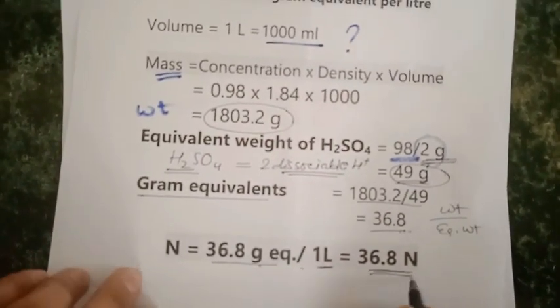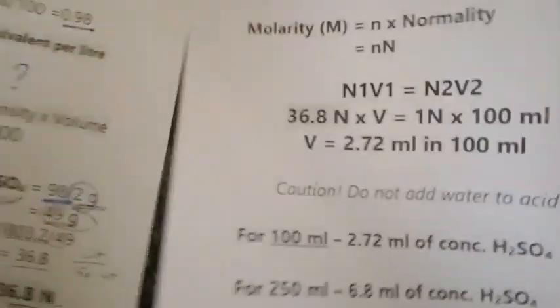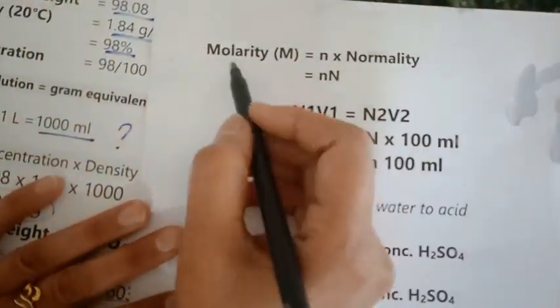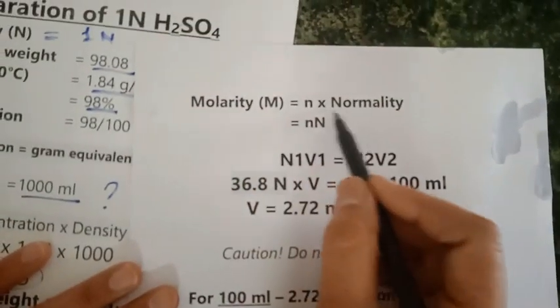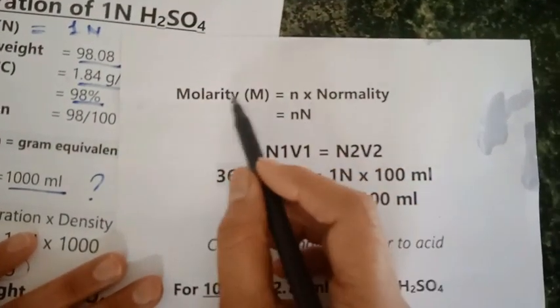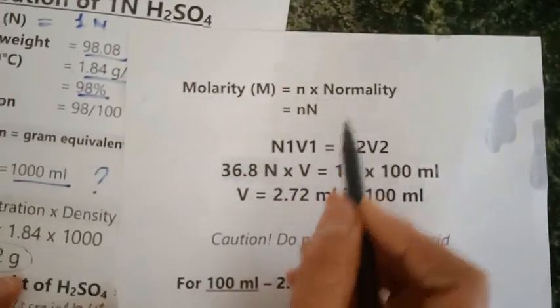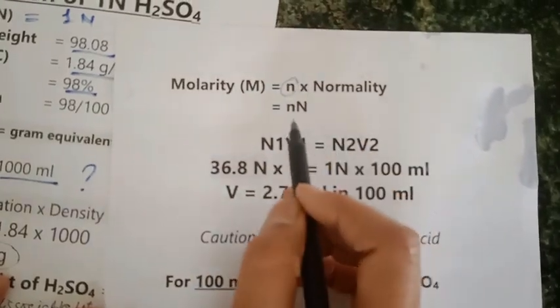For this purpose we can also calculate molarity, which equals n factor times normality. So one normal solution will be equal to two molar solution.